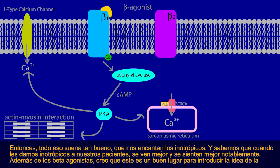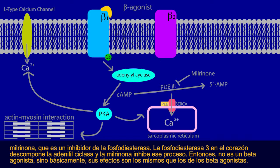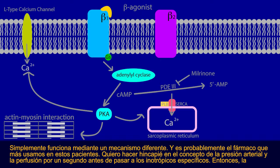Besides beta agonists, milrinone is important to introduce. It is a phosphodiesterase-3 inhibitor — PDE3 breaks down cyclic AMP in the heart, and milrinone inhibits that process. It's not a beta agonist, but its effects are essentially the same, just working by a different mechanism. It's probably the drug we use most in these patients.